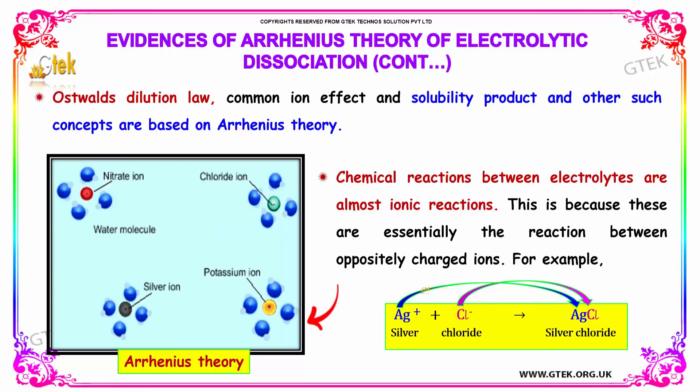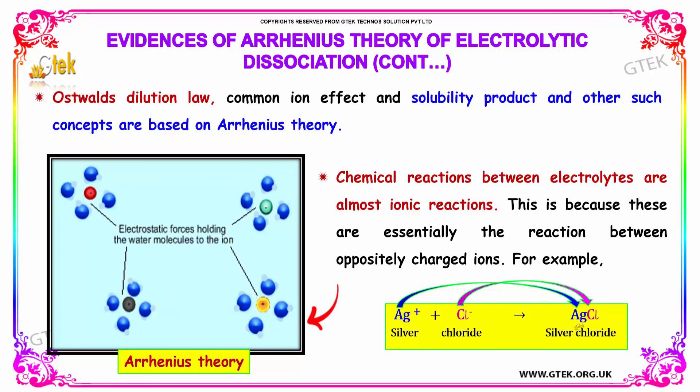Here is a typical example: Ag⁺ and Cl⁻ ions combine to give silver chloride.